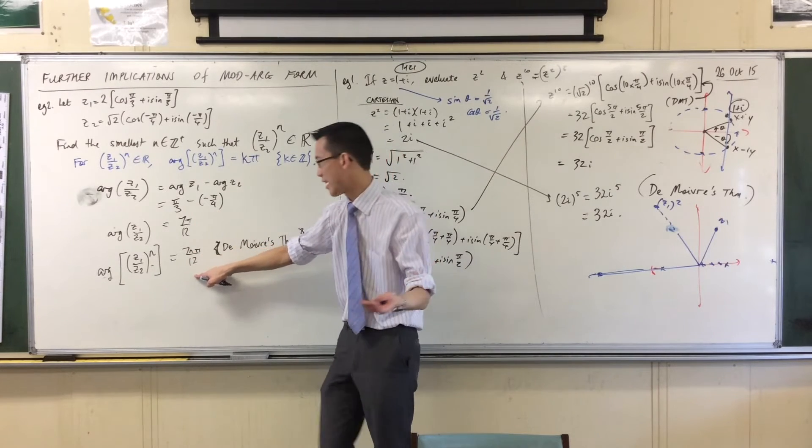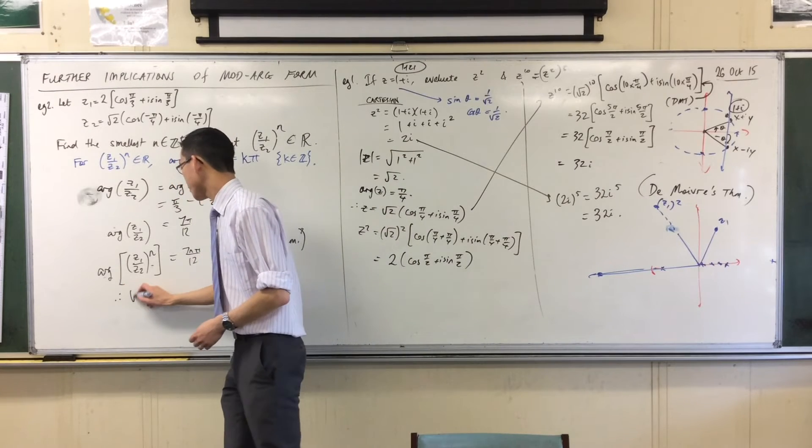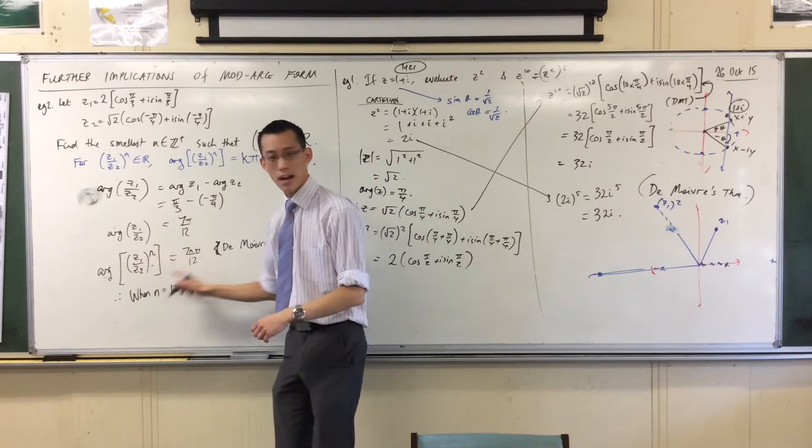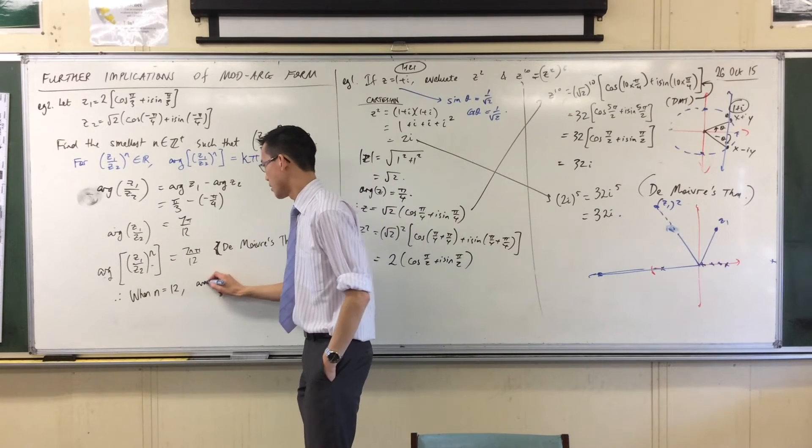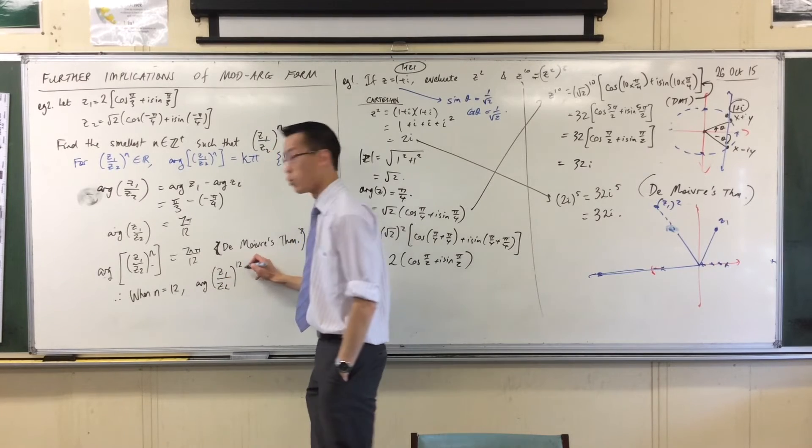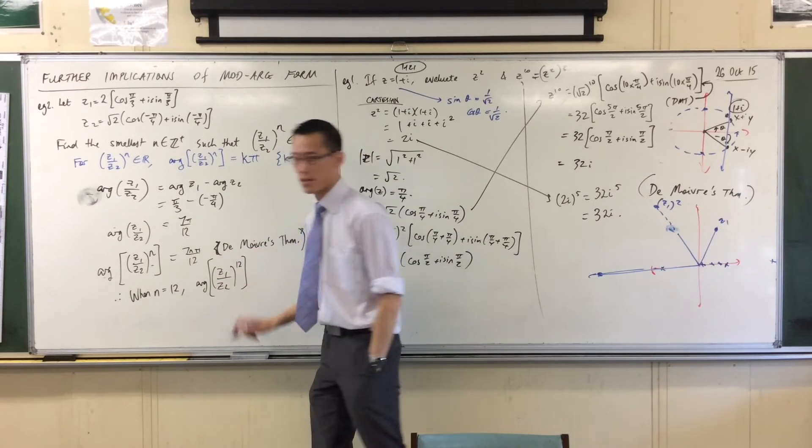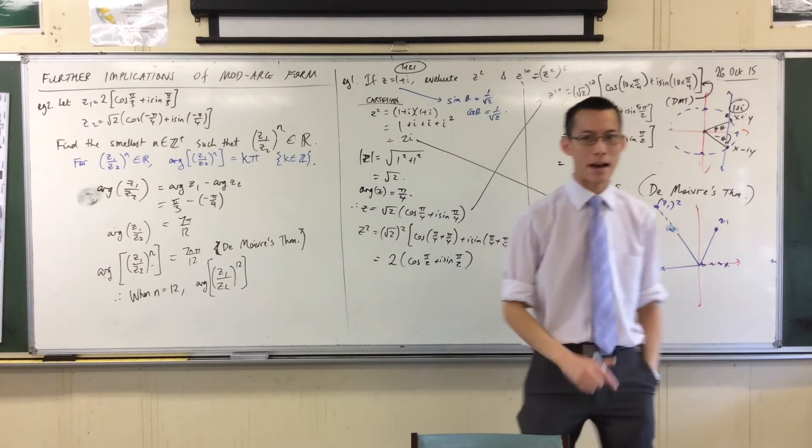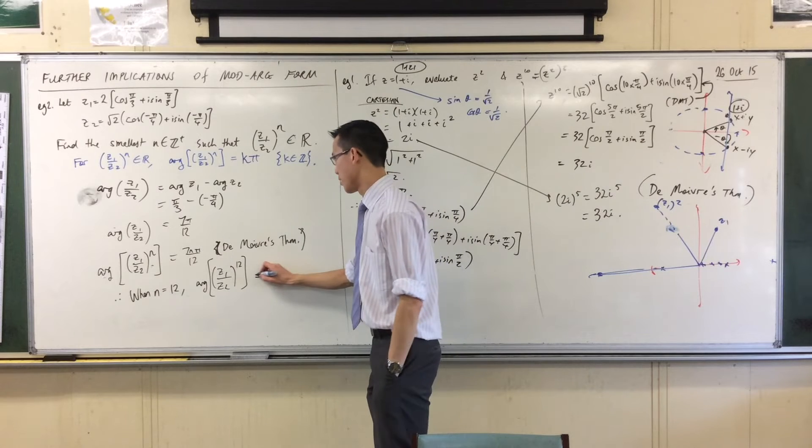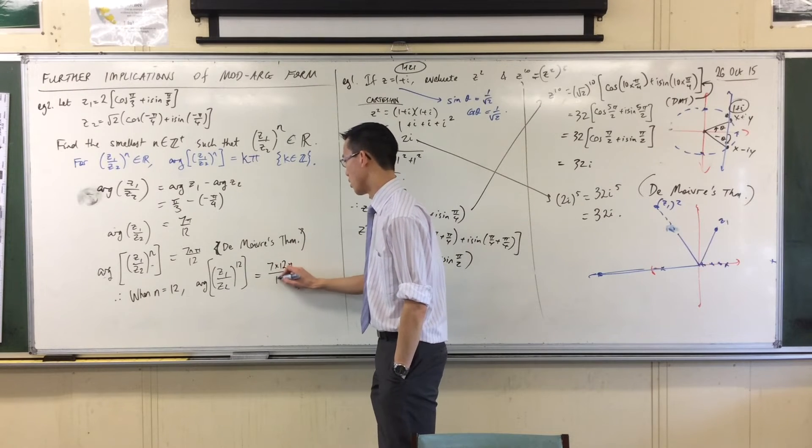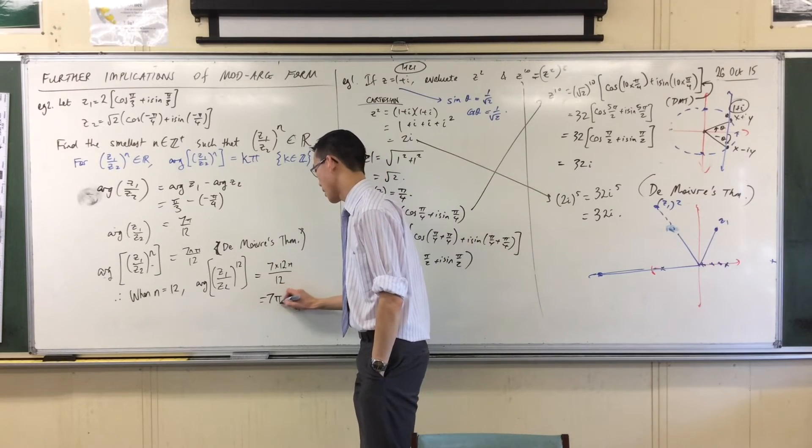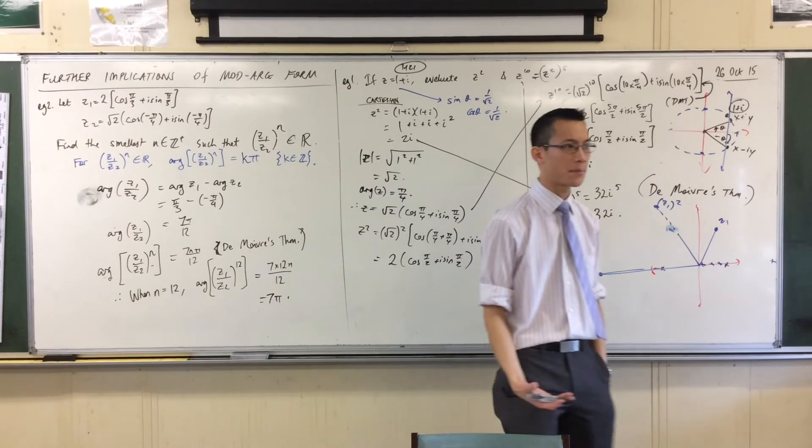So, therefore, when n equals 12, what will the argument be? 7π. The argument will be 7, well, z1 or z2 to the 12. And I'm going to pop the brackets around there because I'm not raising the argument to the 12th power. I'm raising the complex number to the 12th power, which gives me 7 times 12π/12. So, you can see that's going to give me 7π, and that's a whole number.